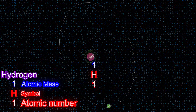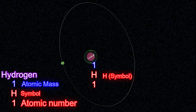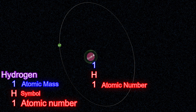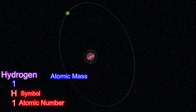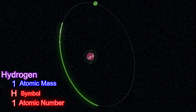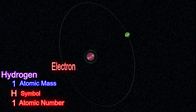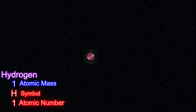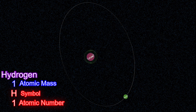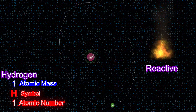Hydrogen is represented as H-1-1 to represent its symbol, its atomic number, and atomic mass. Hydrogen's shell can gain one more electron to make its shell full or complete, or lose one electron in reaction to become a stable atom without an electron. This makes hydrogen a fairly reactive element.